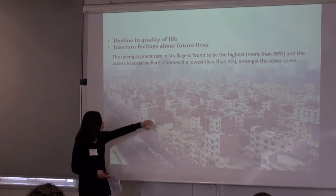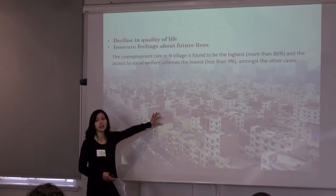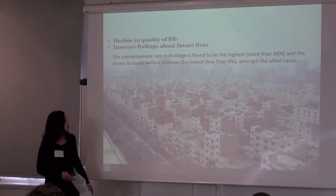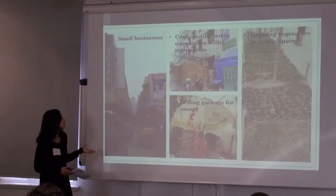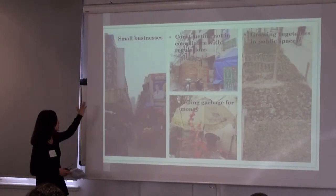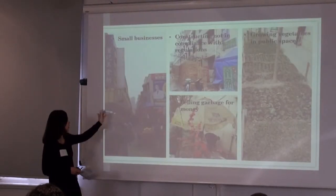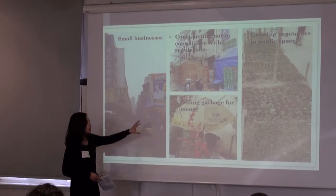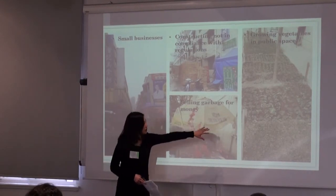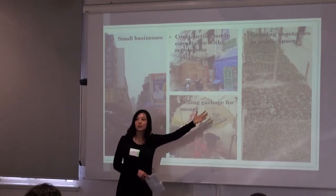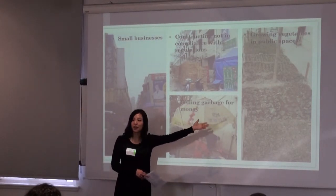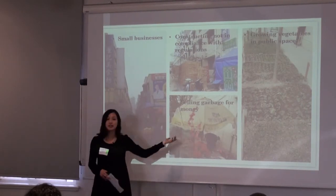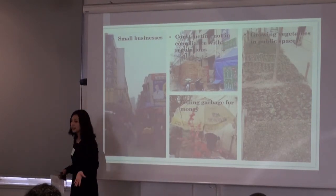In the pictures, the protruding red bricks are built by the villagers themselves. Many villagers also turned their garages into small restaurants and groceries. Most of the green spaces were turned into small plots of farmland. And this old man in the picture makes a living by selling garbage.